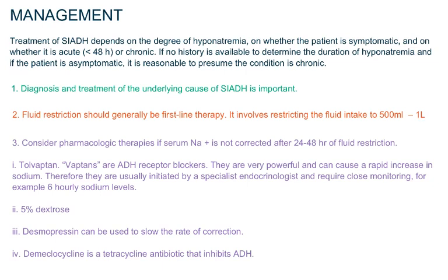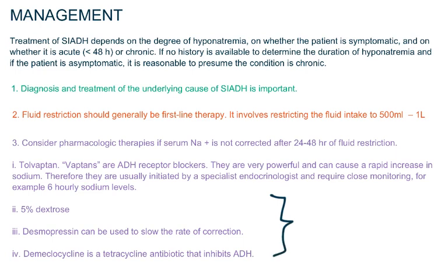If sodium is not corrected after 24 to 48 hours of fluid restriction, then consider pharmacological therapies. Tolvaptan is the first-line medication used to treat SIADH. Vaptans are ADH receptor blockers. They are very powerful and can cause a rapid increase in sodium, so they are usually initiated by a specialist endocrinologist and they require close monitoring — for example, checking sodium every 6 hours. Also, 5% dextrose and desmopressin slow the rate of correction. Demeclocycline, which is a tetracycline antibiotic, inhibits ADH. These are the three Ds used in the treatment of SIADH.